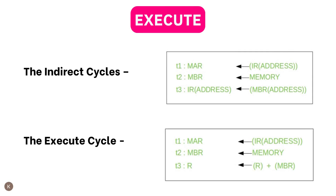Now we will see the indirect cycle. Step 1: the instruction address field is loaded into the Memory Address Register, which is then used to fetch the address of the operand. Step 2: the instruction address field in the IR is modified by updating it with the operand's address fetched in the previous step, effectively converting indirect addressing to direct addressing. Step 3: the IR now contains the modified address field and the instruction is treated as if it used direct addressing from the start.